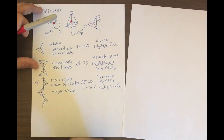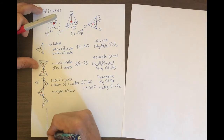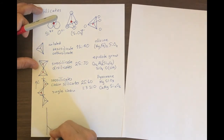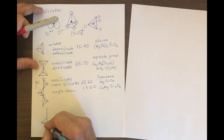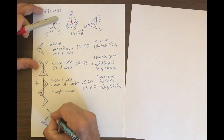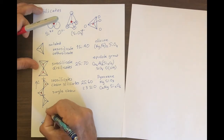Now we're going to look at what happens when we have a double chain — inosilicates again. We're going to draw a tetrahedral chain, then the next tetrahedron, and the next one like that.